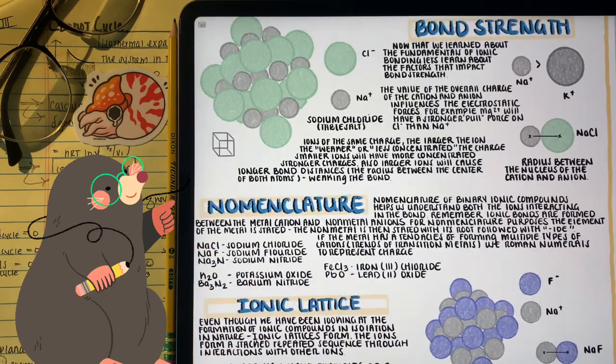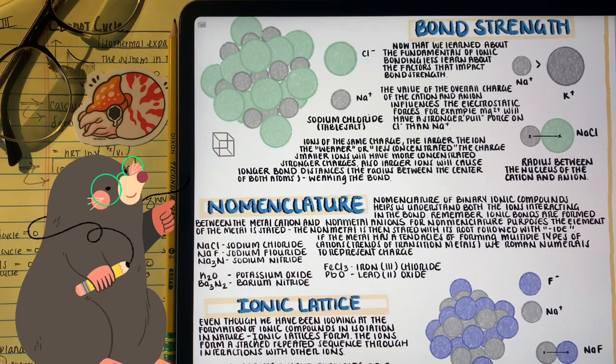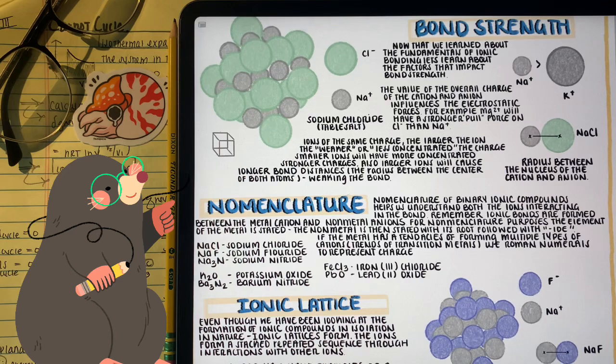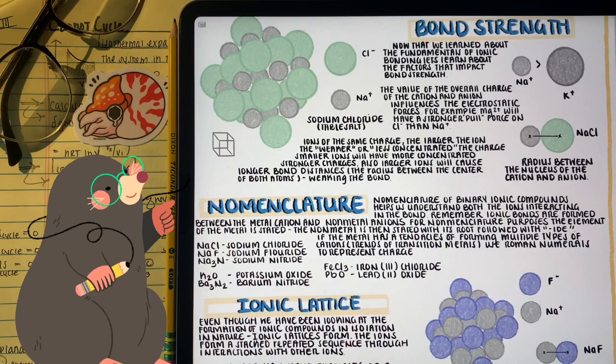There's one more factor I want to talk about, about ionic bonding. There's a reason why sodium fluoride is a stronger ionic bond than sodium chloride, and it's because of atomic radius.